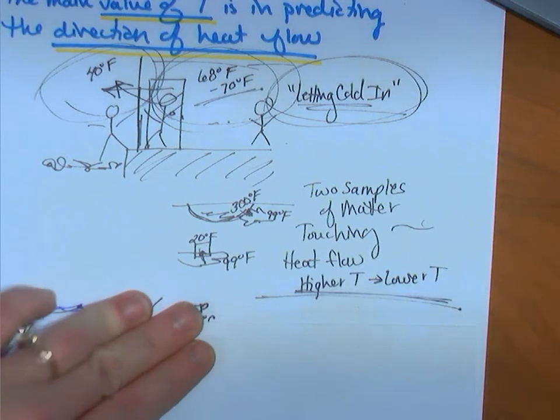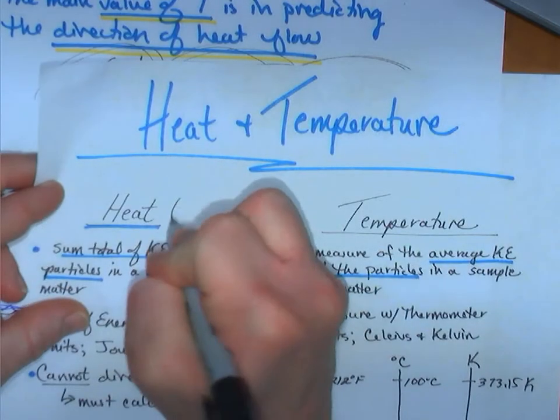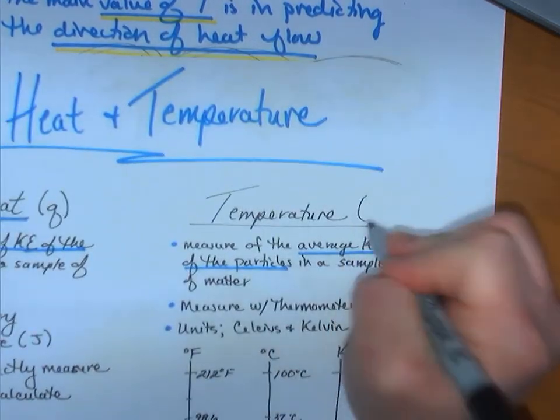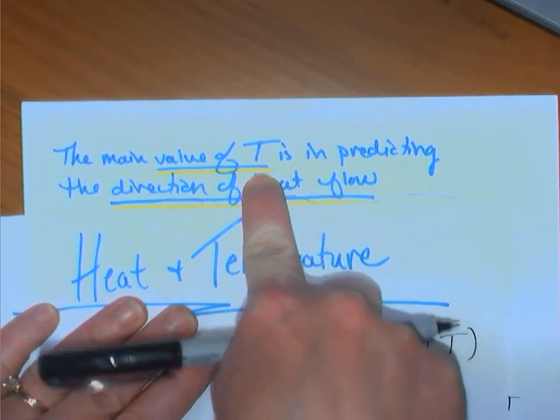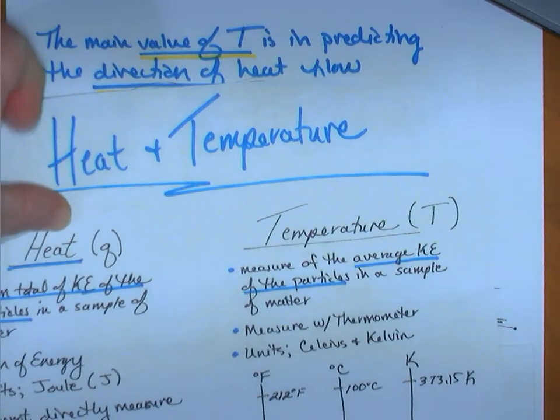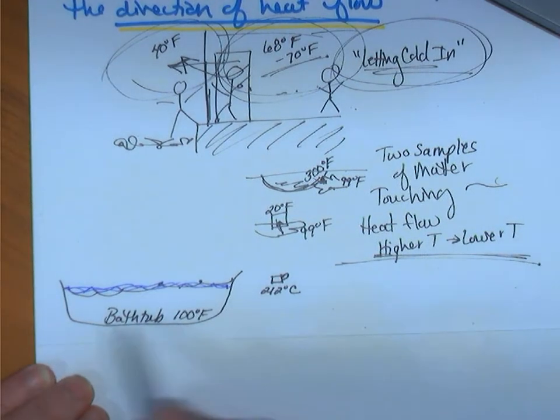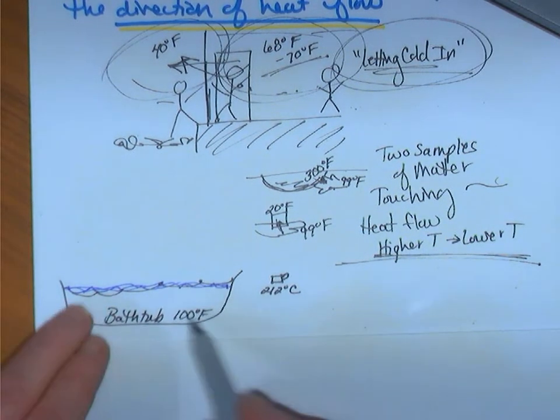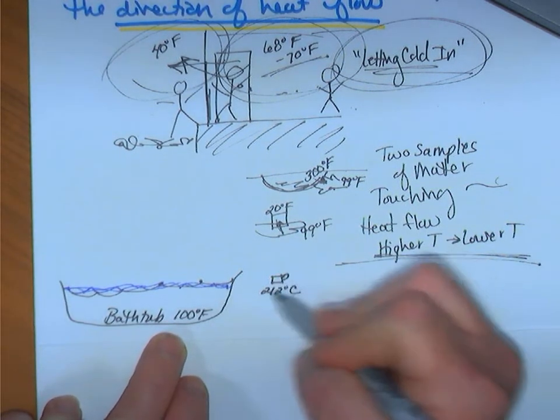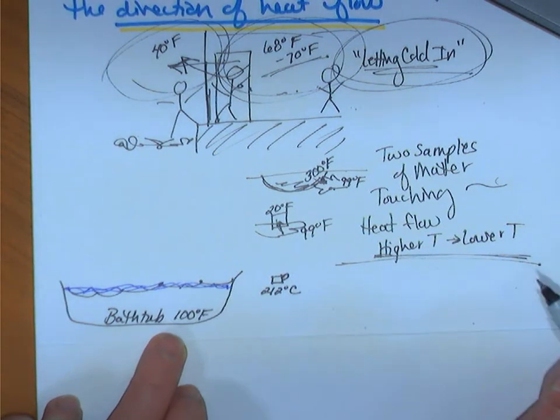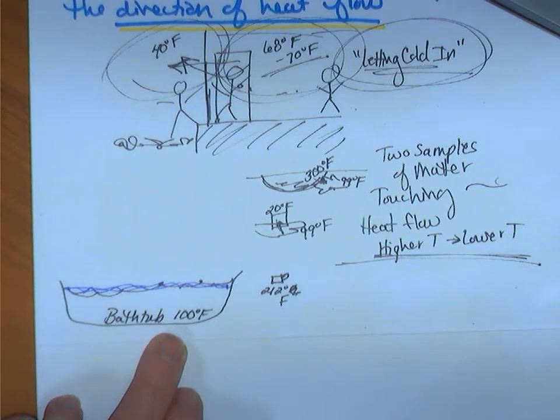Heat is represented by a Q. Where we usually use a capital T for temperature. Hence why the value of T in all of chemistry we use a capital T to represent temperature. Okay. So, let's talk about having a bathtub. Already, maybe some bubbles in there. About 100 Fahrenheit. You're going to make yourself a cup of tea. You're going to boil some water in a coffee cup. It's going to be about 212 Fahrenheit.